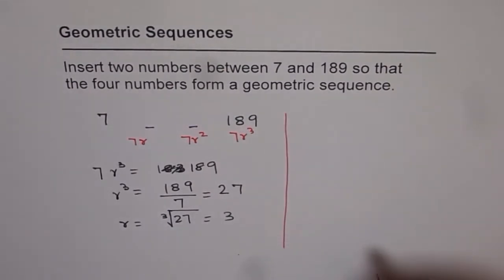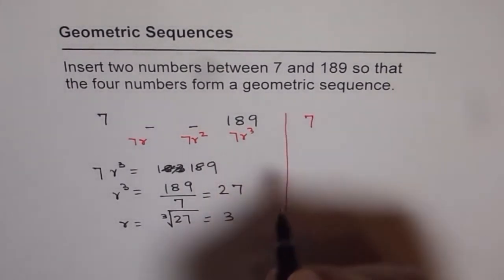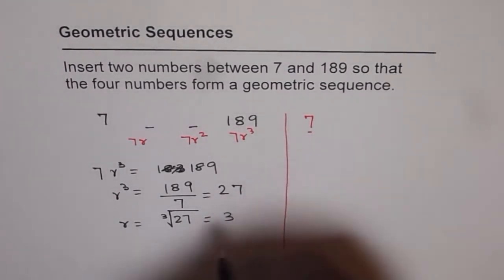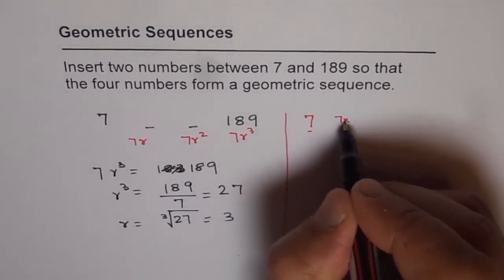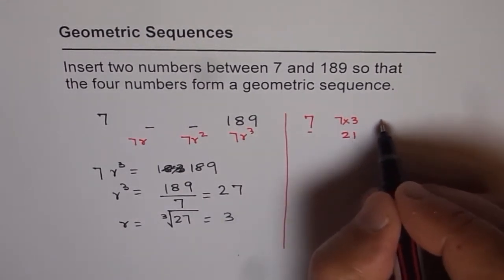Now since we know r, we can find the numbers. So the numbers are starting with 7. 7 times 3, which is 21. And then 21 times 3.